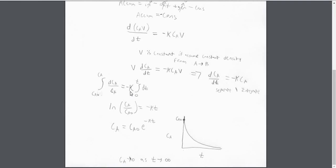We then separate the Ca's from the t's and then integrate. So we can integrate from the initial condition, which is Ca0 at time equals zero, to any Ca we want at any time we want. And when you do this integration, you get ln(Ca/Ca0) equals negative Kt. Solving for Ca, we get that Ca equals Ca0 times e to the negative Kt.